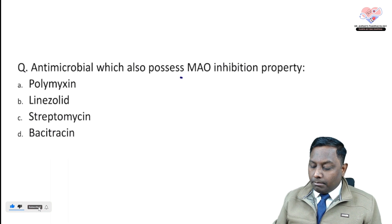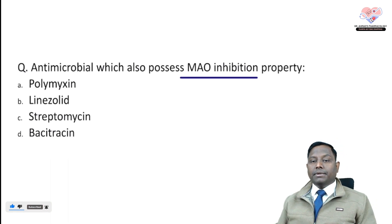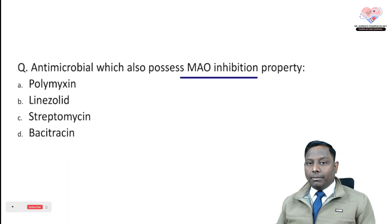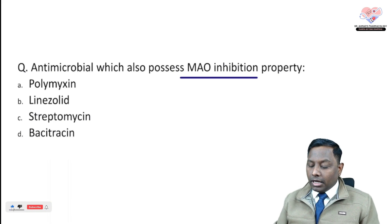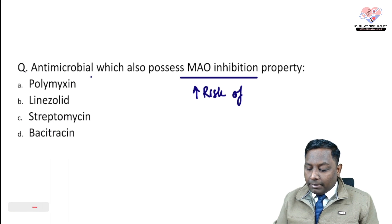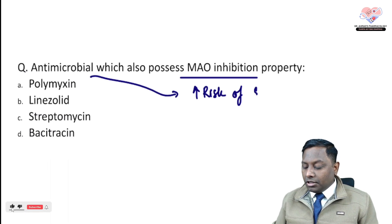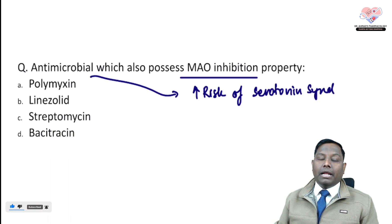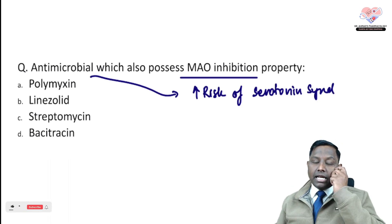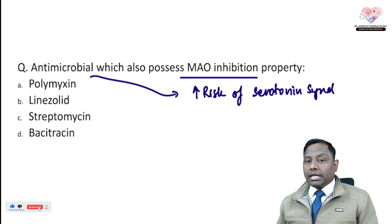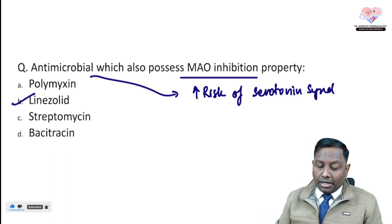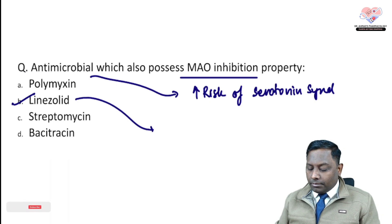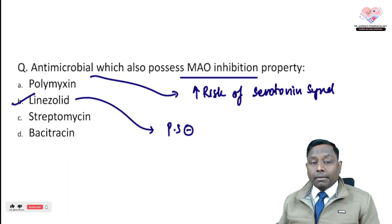Which antimicrobial also possesses MAO inhibiting property? This question has been asked in multiple formats — for example, which antimicrobial can increase the risk of serotonin syndrome? Serotonin syndrome is associated with SSRIs, SNRIs, and MAO inhibitors. The antimicrobial that can increase the risk of serotonin syndrome is linezolid, which is a protein synthesis inhibitor acting at the 50S ribosome.